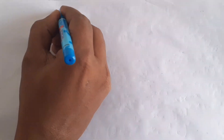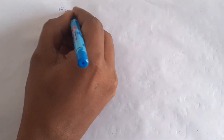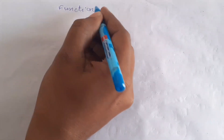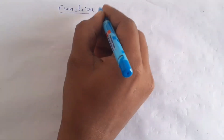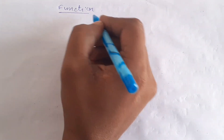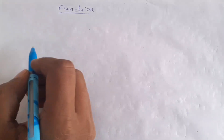Now, the chapter is the function. Function is the limit and the continuity. Function is the first step.